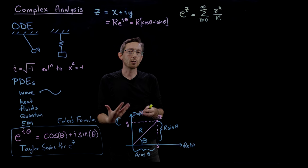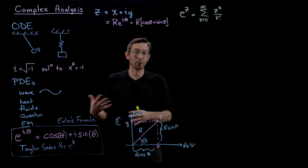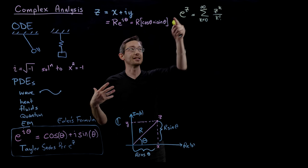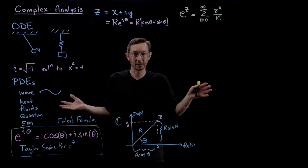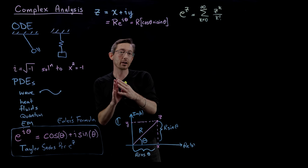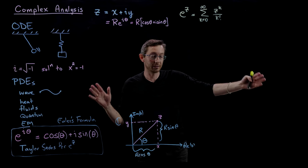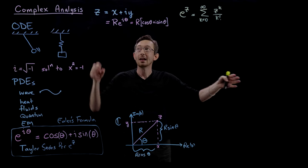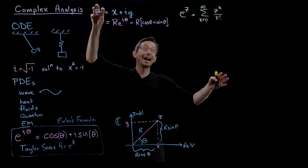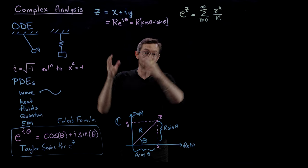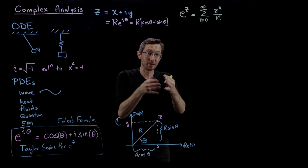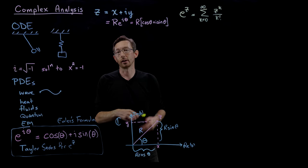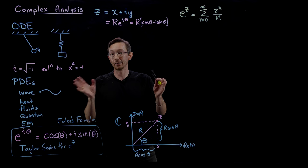This is going to be a theme in the following lectures when we start thinking about functions of a complex variable. We're basically going to take functions of a real variable — like sine of x, cosine of x, e to the x, logarithm of x — write down the real-valued Taylor series, and then plug in a complex variable into that argument and expand things out and see what happens.